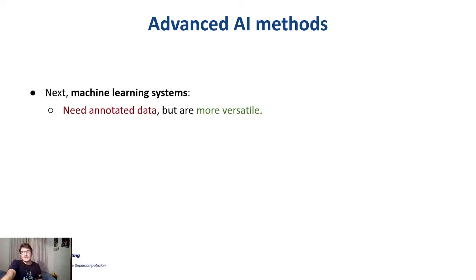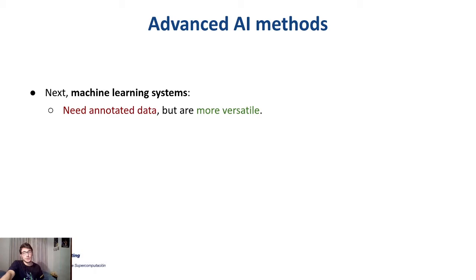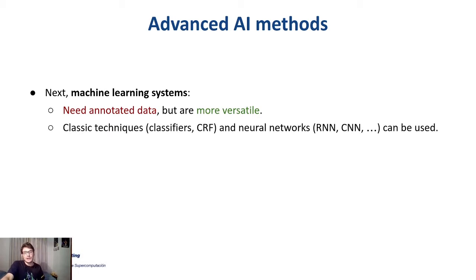The problem with machine learning systems is that we need annotated data, and this is not always easy to come across — especially in the clinical domain where there are a lot of privacy issues. The advantage is that these systems are supposed to be more versatile. You can train a neural network, but classic techniques have also been shown to work, such as classifiers or conditional random fields.